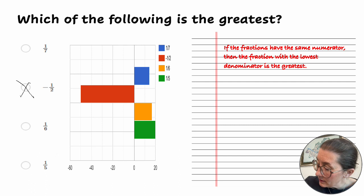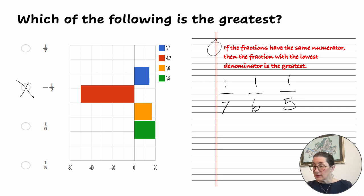Now our other ones that are left are 1/7, 1/6, and 1/5. The rule is, if the fractions have the same numerator, so that's the top number, then the fraction with the lowest denominator, that's the bottom number, is the greatest. So in this case, we do have the same numerators, and the lowest number amongst the denominators is 5. So that would mean that 1/5 is our answer.